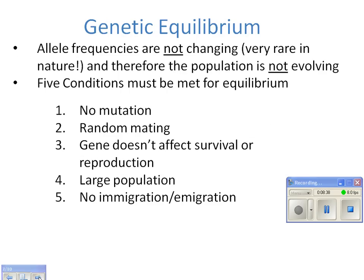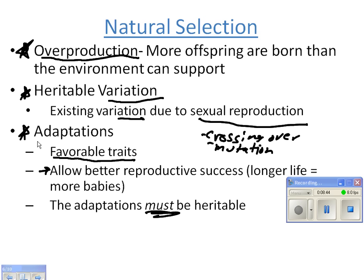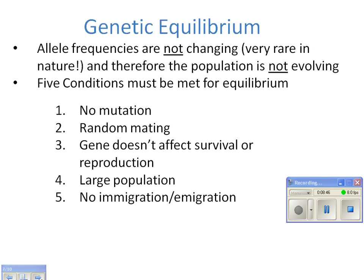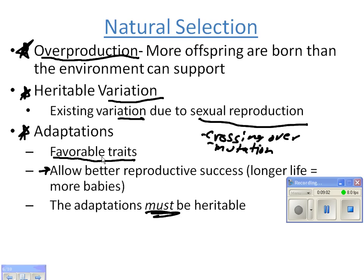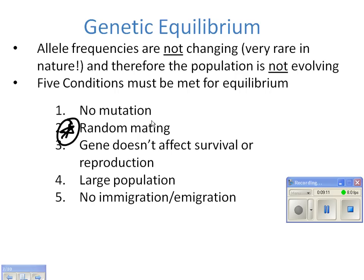When a population is not evolving — when it does not meet one of these conditions — it's called at equilibrium. Key markers for a population being at equilibrium are random mating, meaning no organism has more reproductive success than another, and the population also has to be fairly large.